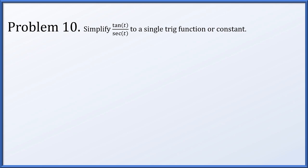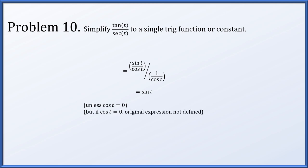In problem 10, we simplify tan(t)/sec(t). Replacing in terms of sines and cosines: tangent is sin t/cos t and secant is 1/cos t. We have a shared denominator of cosine which cancels, leaving sin t. If cos t = 0, the secant wouldn't exist in the original expression anyway, so no additional restrictions are needed.